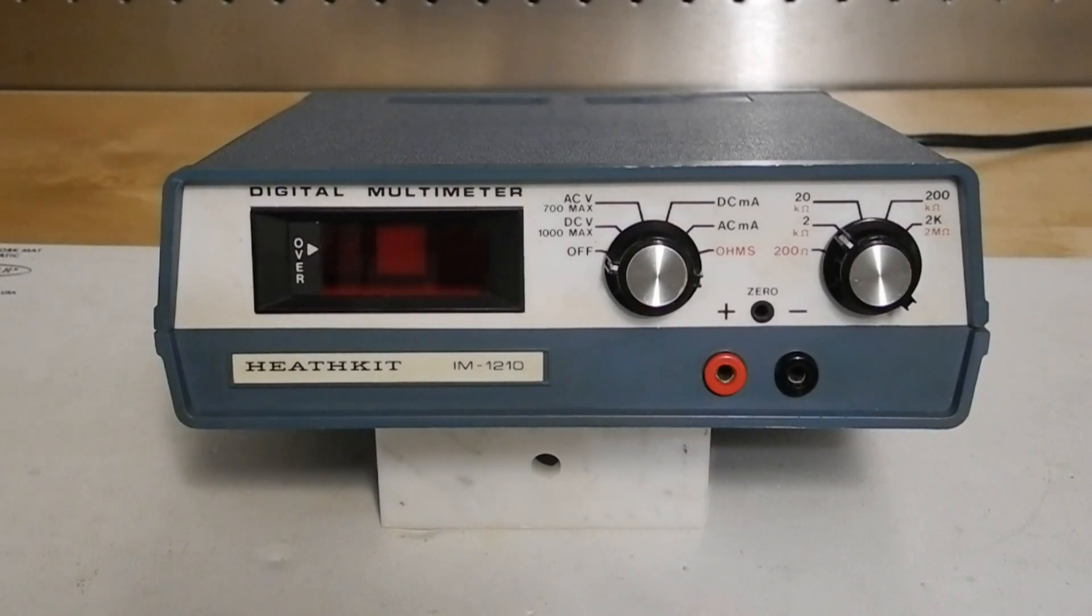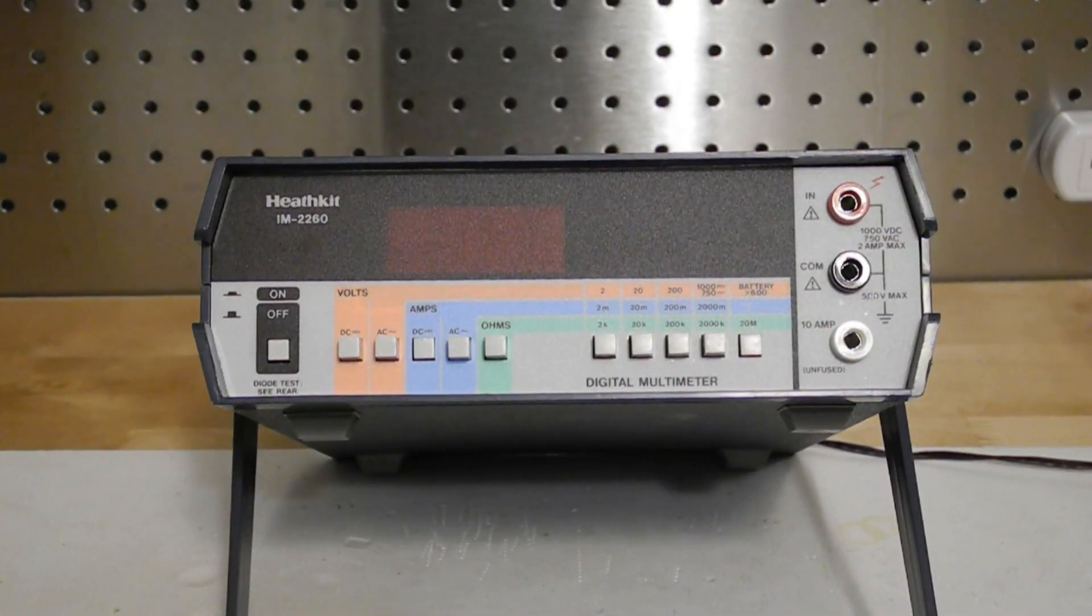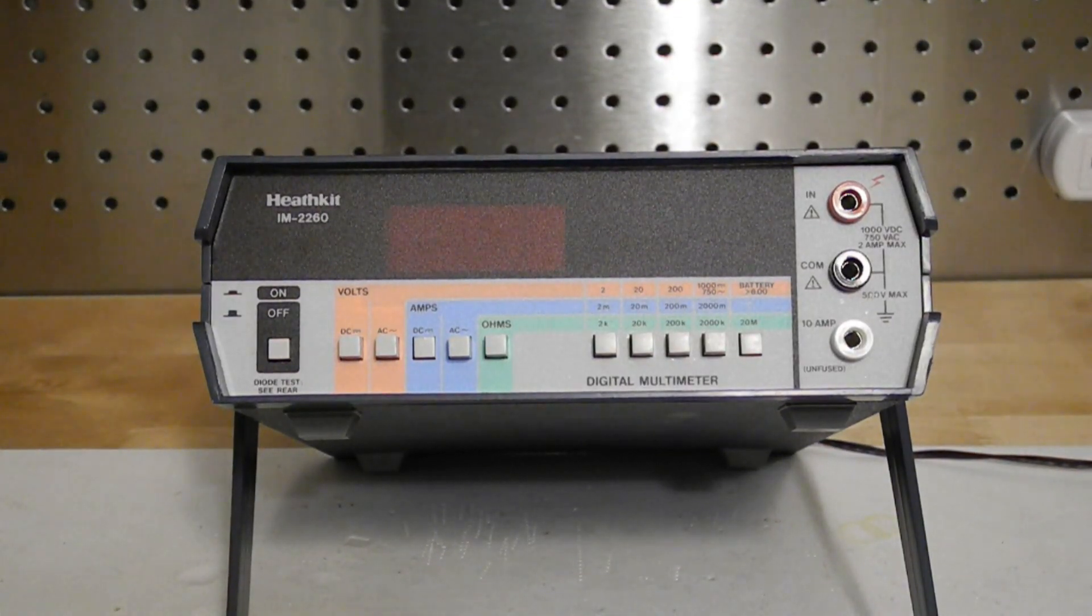It was offered from 1976 to 1982 and typically retailed at a cost of US$67.95. The IM1210 was sold as a kit. Heathkit also sold a factory assembled and calibrated version at higher cost, the SM11210. The IM1210 was replaced by the IM2260 in 1982.